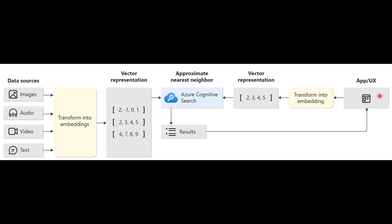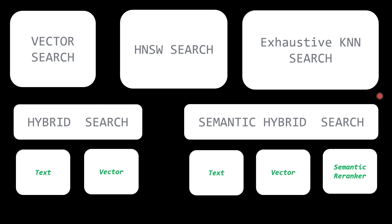Let's dive a little bit deeper on how this happens. We will discuss these types of searches: a vector search where we search with the vector — including an HNSW search and an exhaustive KNN search — then a hybrid search which is a combination of text and vector, and then a semantic hybrid search with text, vector, and a semantic ranker.